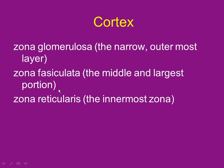Next layer, the zona fasciculata — this makes glucocorticoids. I think 'glucose' like sugar. Sugar looks like rocks but crumbles into powder if you crush it — a little softer. We're getting closer to the gooey center. The glucose/sugar regulators are in this layer, and the hormone is cortisol — the stress hormone. When cortisol comes out, it helps regulate blood sugars, boosting them so your brain can think quickly in a stressful situation.